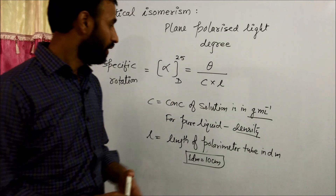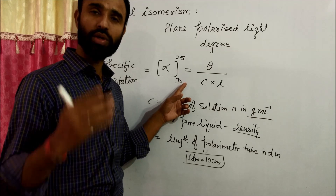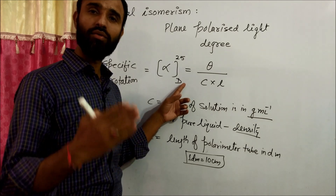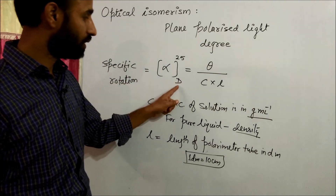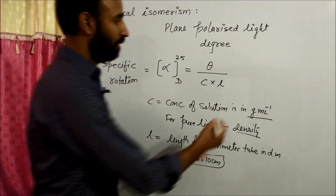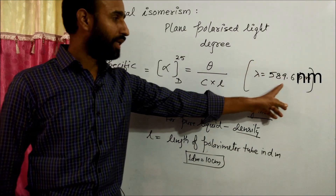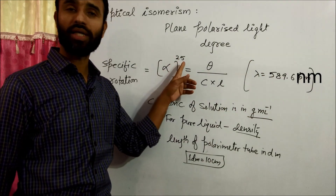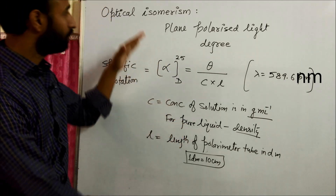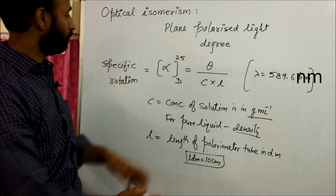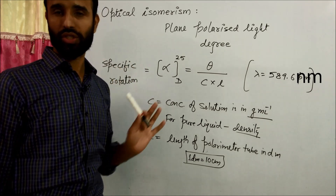D25 means we use the D line of the sodium lamp, whose wavelength is 589.6 nm, and the temperature is 25 degrees Celsius. This is the way to calculate specific rotation.